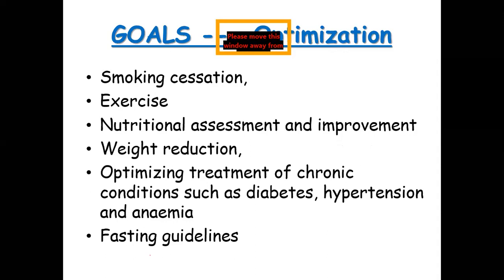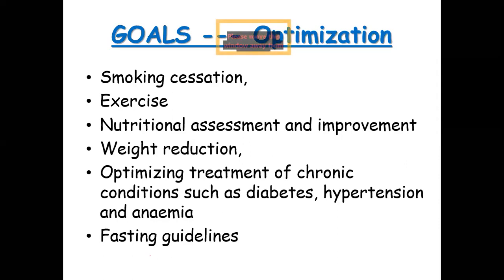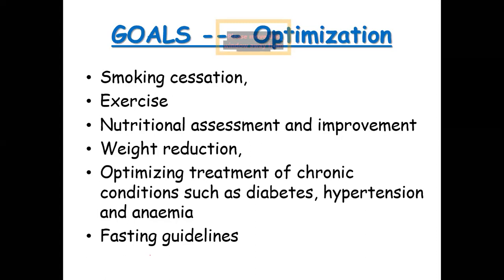The goal in the pre-operative clinic is the optimization of the patient before undergoing surgery, and this optimization is achieved by various means. If the person is a smoker, the patient can be asked for cessation of smoking. If there are certain surgeries that require improved pulmonary functions, then pulmonary exercises or even general physical exercises can be advised. The nutritional assessment of the patient can be assessed, and if the patient is malnourished, we can advise methods or refer them to a nutritionist for improvement in nutritional status.